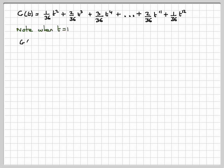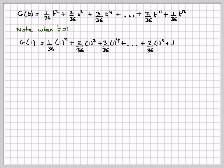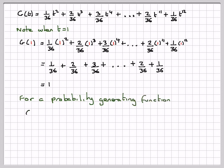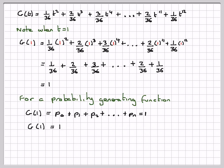Note: when T = 1, G(1) = 1/36 · 1² + 2/36 · 1³ + 3/36 · 1⁴ + ... + 2/36 · 1¹¹ + 1/36 · 1¹², which equals 1/36 + 2/36 + 3/36 + ... + 2/36 + 1/36, and this will be equal to 1.